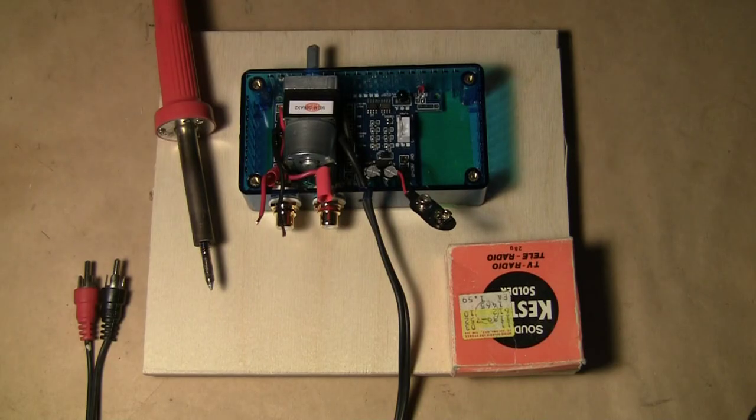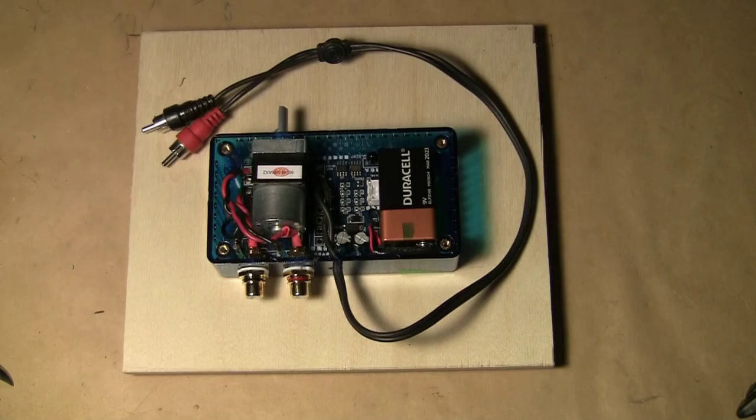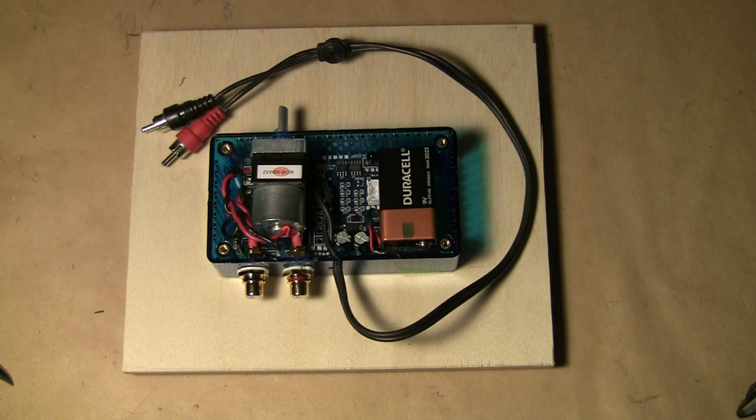Time to solder up the connections. After about 20 minutes of soldering, this is the final result. Everything went well except for soldering the RCA jacks. There was very little room between the Alps potentiometer motor and the back of the case.